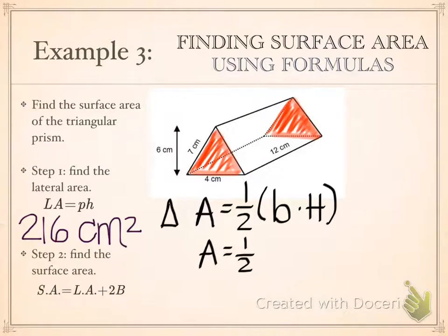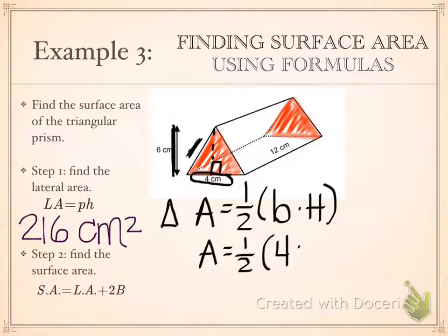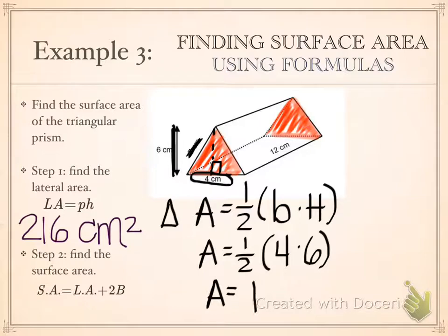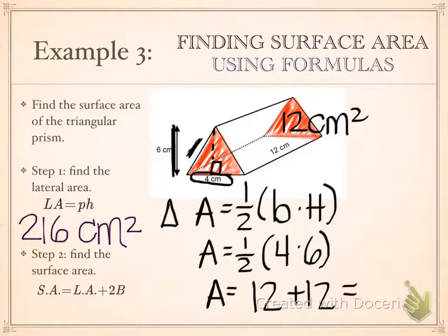For this base, we have a triangle. The area equals one-half base times height. The base of this triangle is 4 centimeters, and the height is the altitude — not the 7, which is the length of the side, but the altitude of 6 centimeters. So one-half times 4 times 6: 4 times 6 is 24, and half of 24 is 12. The area of just one triangle is 12 square centimeters, but since we have two of them, that's a total of 24 square centimeters.